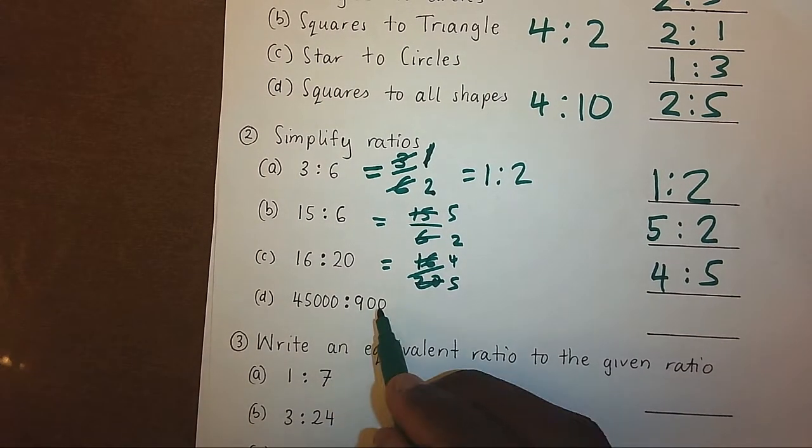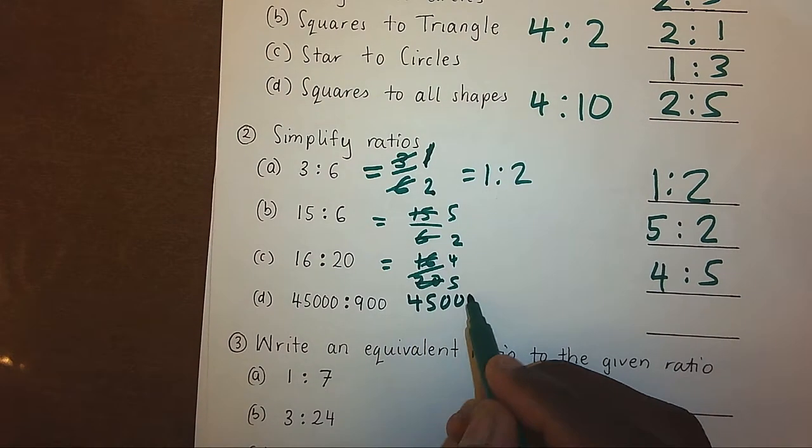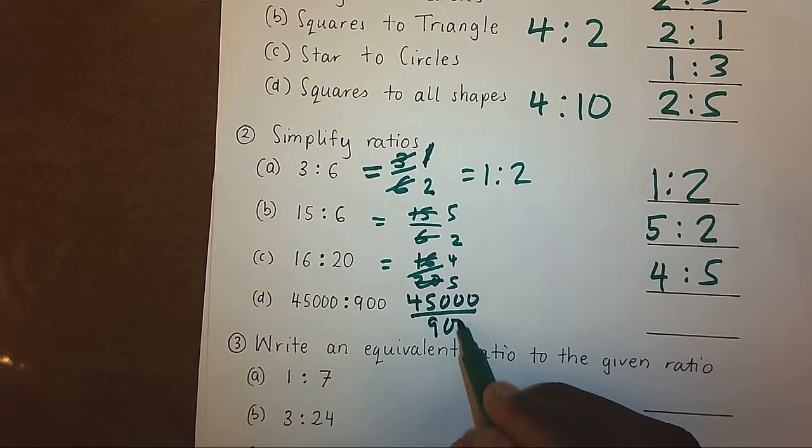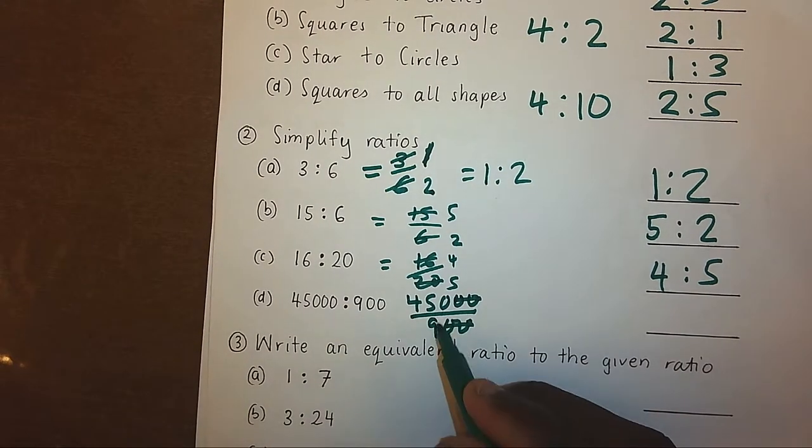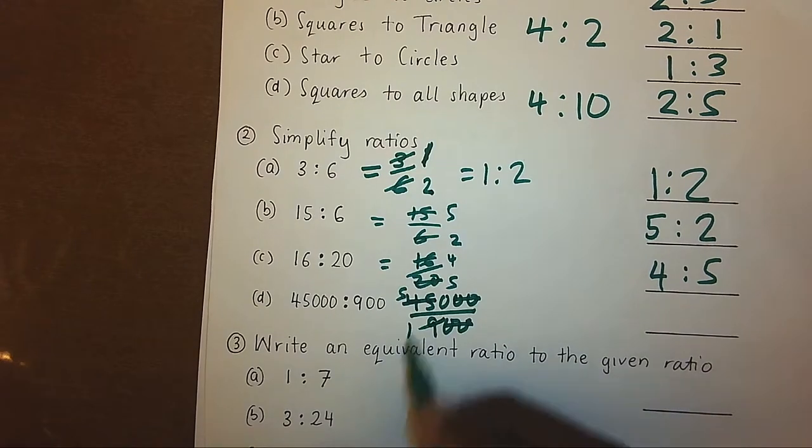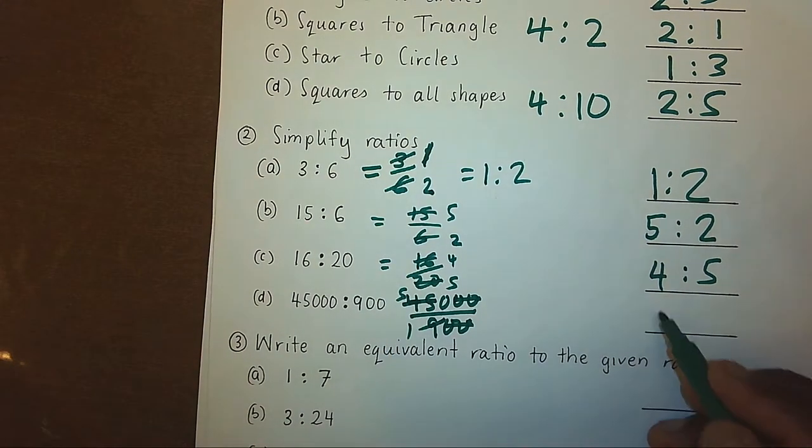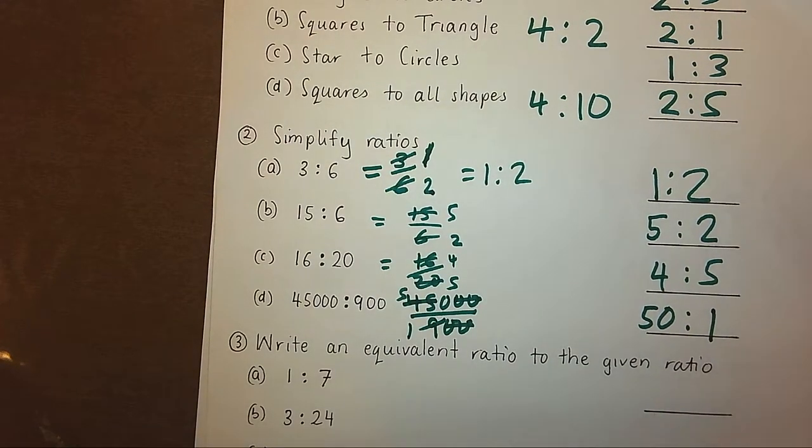Now, here, we have 45000 over 900. We simplify by removing two zeros, then divide by 9 to get 5, divide by 9 to get 1, meaning 5 ratio 1. That's how we can simplify a ratio.